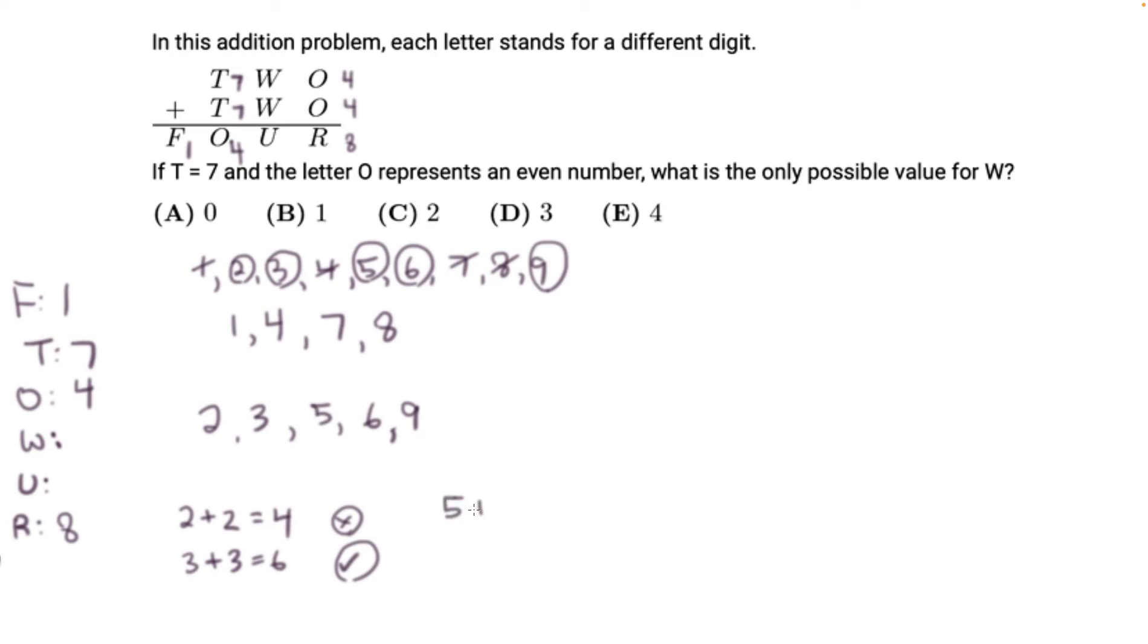And then next we have 5 plus 5, that's 10. Since the letter U can only have a single digit, 10 doesn't work. And then 6 plus 6 is also 2 digits, so it doesn't work. And 9 plus 9 is also 2 digits, so it doesn't work. So only 3 plus 3 equals 6 works.